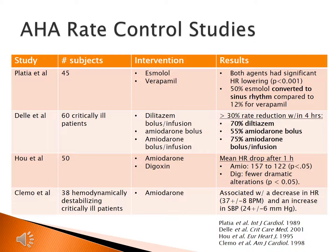A study by Platio's group compared esmolol to verapamil for heart rate control. Esmolol was given as a bolus and infusion, while verapamil was given as boluses. Both agents had significant heart rate-lowering abilities. However, 50% of esmolol-treated patients converted to sinus rhythm compared to only 12% in the verapamil group. This tells us both agents are useful for lowering heart rate, but esmolol is more likely to achieve sinus rhythm conversion.